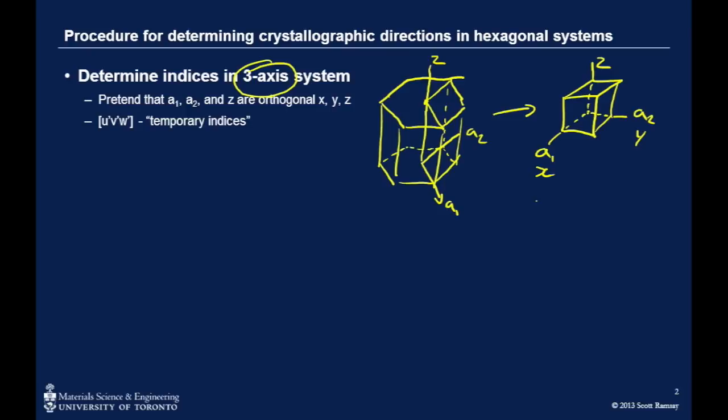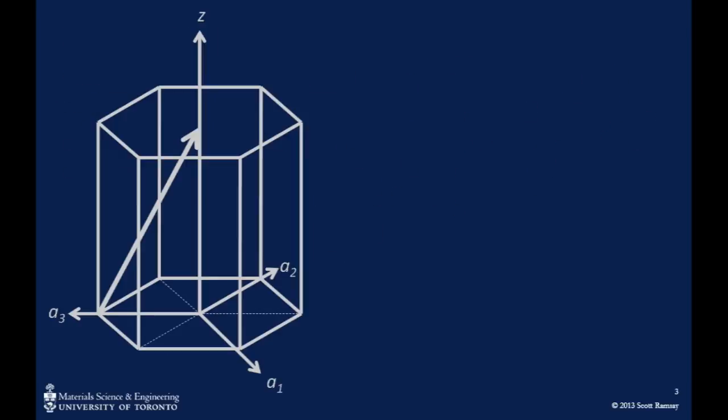So this is an extra step, and this is really the most challenging part of working with directions in hexagonal. Beyond that, it's actually fairly straightforward. We just have to do a little bit of simple math there and then convert that and put it in enclosures. So the hard part is that initial visualization and then a little bit of simple math, and then we're done.